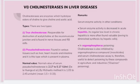Cholinesterases are enzymes which hydrolyze esters of choline to give choline and acetic acid. There are two types: true cholinesterases and pseudocholinesterases. True cholinesterases are responsible for destruction of acetylcholine at the neuromuscular junction and are found in nerve tissues and red blood cells. Pseudocholinesterases are found in various tissues such as liver, heart muscle, and intestine, and it is this type which is present in plasma.